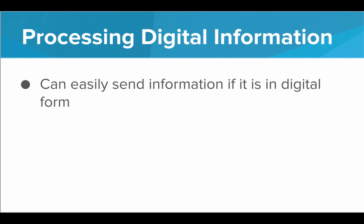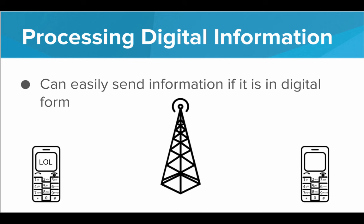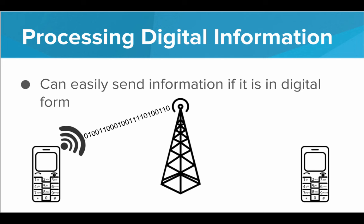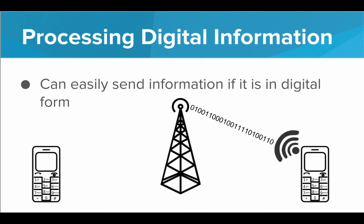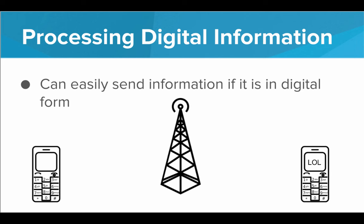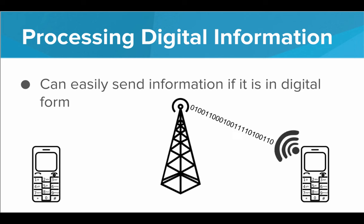And lastly, we can easily send information if it's in digital form. If I'm on my cell phone and I want to type 'LOL' to a friend, it's very easy for computers to break down that sentence into binary data, and then the hardware of my phone can spit out that binary data as a burst of radio waves — perhaps long waves for a one and short waves for a zero. Those waves are picked up by a cell tower, repeated across more cell towers, and finally get to my friend's phone, which receives the binary message and uses the same process to re-encode it back into text.